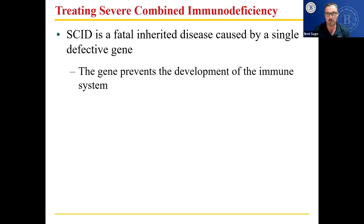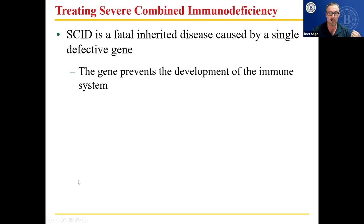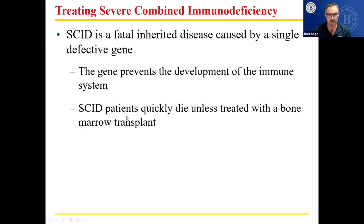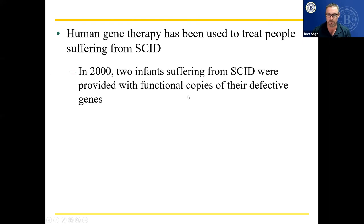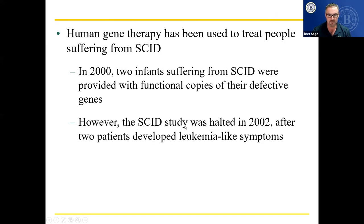In the 90s, there was also a movie called Bubble Boy with Jake Gyllenhaal — his mother tried to convince him he had no immune system so he wouldn't leave home. SCID patients quickly die unless treated with a bone marrow transplant or they have to be completely isolated. Human gene therapy has been used to treat SCID. In the year 2000, two infants suffering from SCID were provided with functional copies of their defective genes. However, the SCID study was halted in 2002 after two patients developed leukemia-like symptoms. Since then, some developments have happened but nothing significant yet.